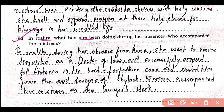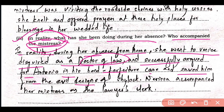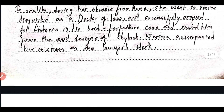The next question is: in reality, what has she been doing during her absence? Who accompanied the mistress? Nerissa goes with her. In reality, during her absence from home, she went to Venice disguised as a lawyer — a doctor of law — and successfully argued for Antonio in his bond forfeiture case, and saved him from the evil designs of Shylock. Nerissa accompanied her mistress as the lawyer's clerk. Don't write so much — keep the answer concise.